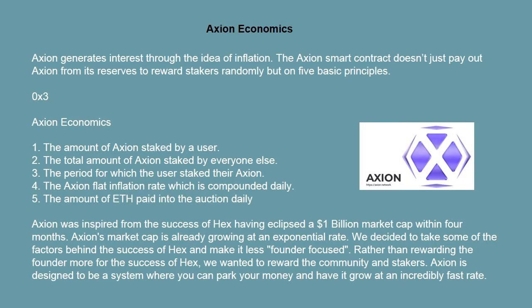Axion Economics: Axion generates interest through the idea of inflation. The Axion smart contract pays out based on 5 basic principles: 1. The amount of Axion staked by a user. 2. The total amount of Axion staked by everyone else. 3. The period for which the user staked their Axion. 4. The Axion flat inflation rate, which is compounded daily. 5. The amount of ETH paid into the auction daily.